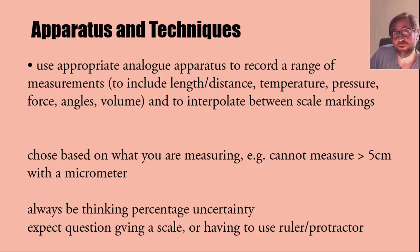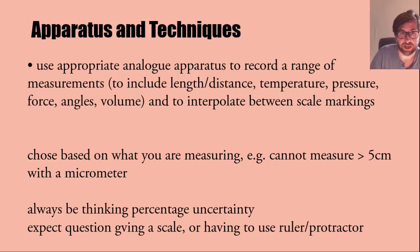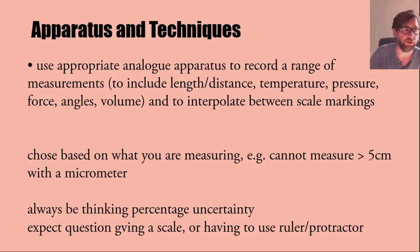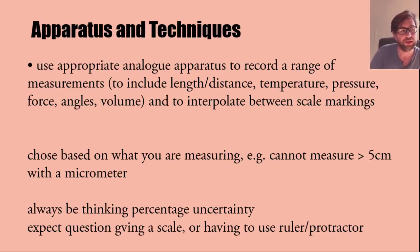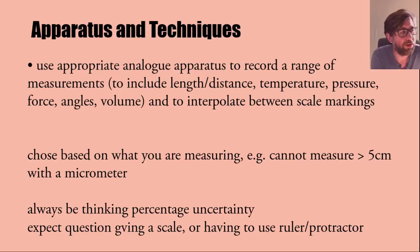You have to be able to choose an appropriate instrument — what's appropriate for measuring 10 centimeters is different from measuring 10 meters. A ruler wouldn't be accurate for 10 millimeters, so you'd use a vernier scale or micrometer — those are analog apparatus. The phrase 'interpolate between scale markings' signals that they could give you a scale to read, or ask you to use a ruler or protractor in the exam. Always be thinking about percentage uncertainty and how you can reduce the scale division.